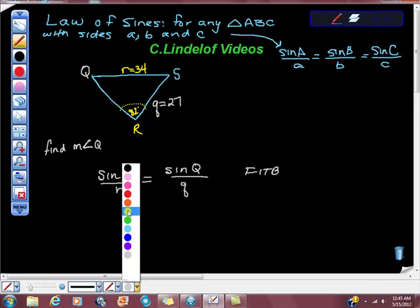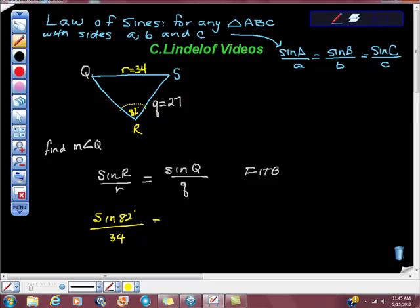So I'm going to continue. It's going to say sine of 82 degrees over 34, because we go straight out here, is equal to sine of Q. Oh, look what's going to happen here. Sine of Q over side q, and side q is 27, so there's our 27.